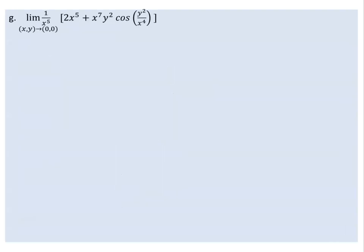Now consider the limit of (1/x⁵) times (2x⁵ + x⁷y² cosine(y²/x⁴)) as (x, y) approaching to the origin. We are unable to use direct substitution because everything becomes undefined.